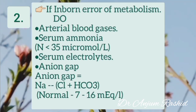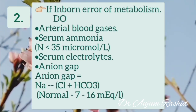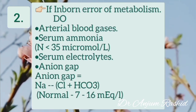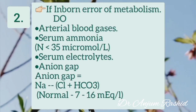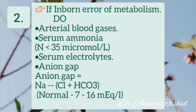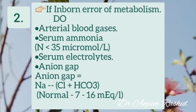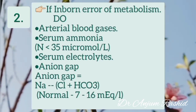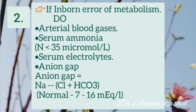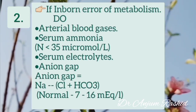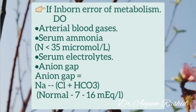The first initial step is to perform the following four laboratory tests. Number one, arterial blood gases. Number two, serum ammonia — normal level is less than 35 micromoles per liter. Number three, serum electrolytes. And number four, calculate the anion gap using the formula: sodium minus (chloride plus bicarbonate). The normal anion gap in babies is 7 to 16 milliequivalents per liter.